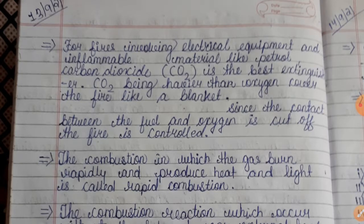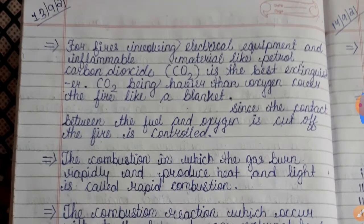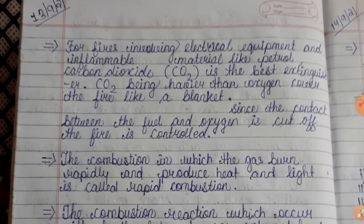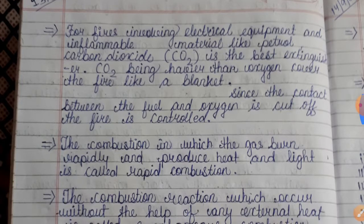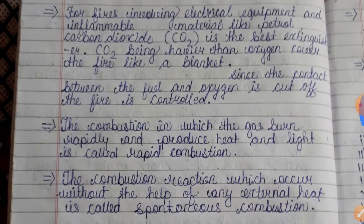For a fire involving electrical equipment and inflammable materials like petrol, carbon dioxide is the best extinguisher. CO2, being heavier than oxygen, covers the fire like a blanket. Since the contact between the fuel and oxygen is cut off, the fire is controlled.